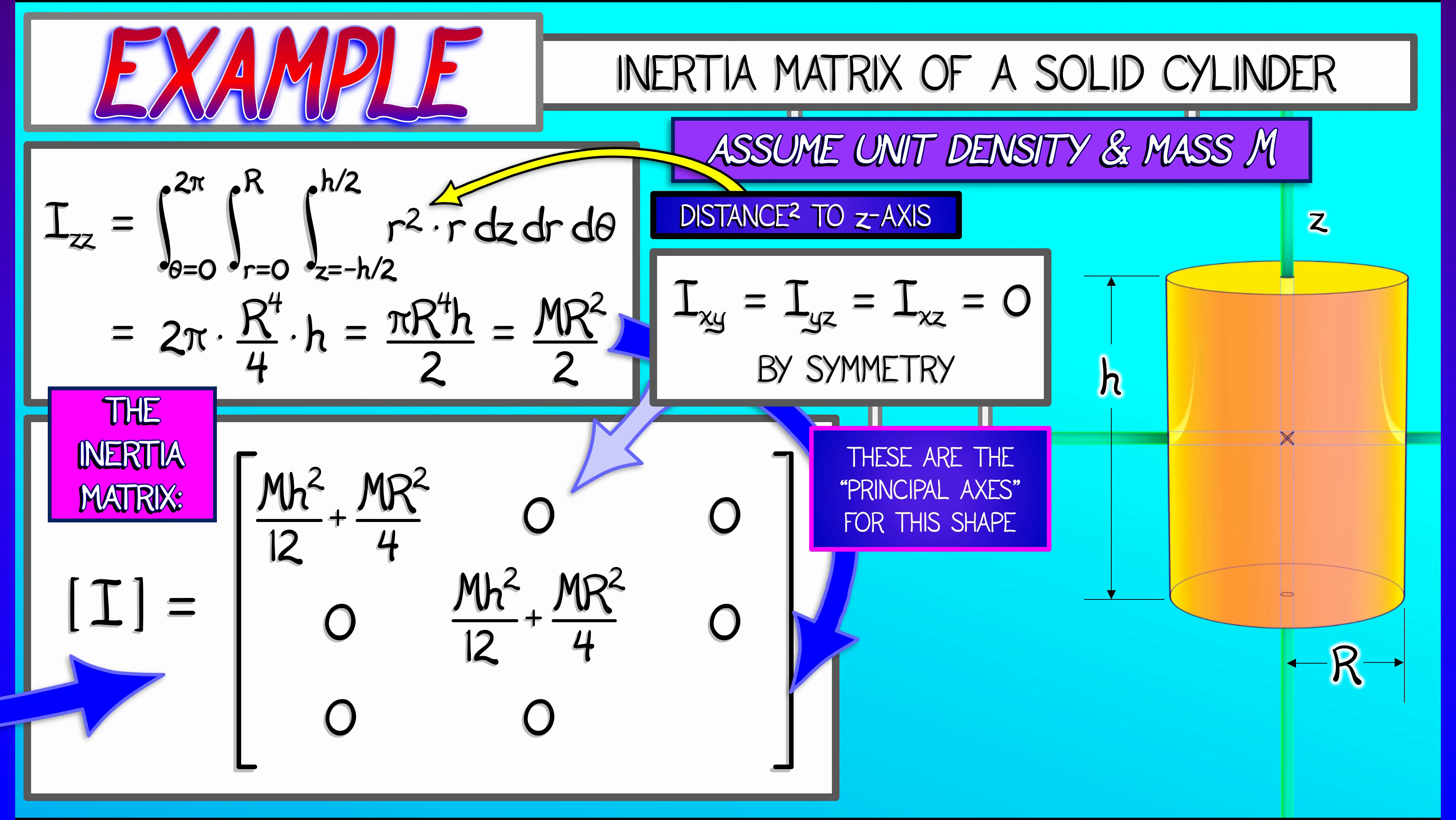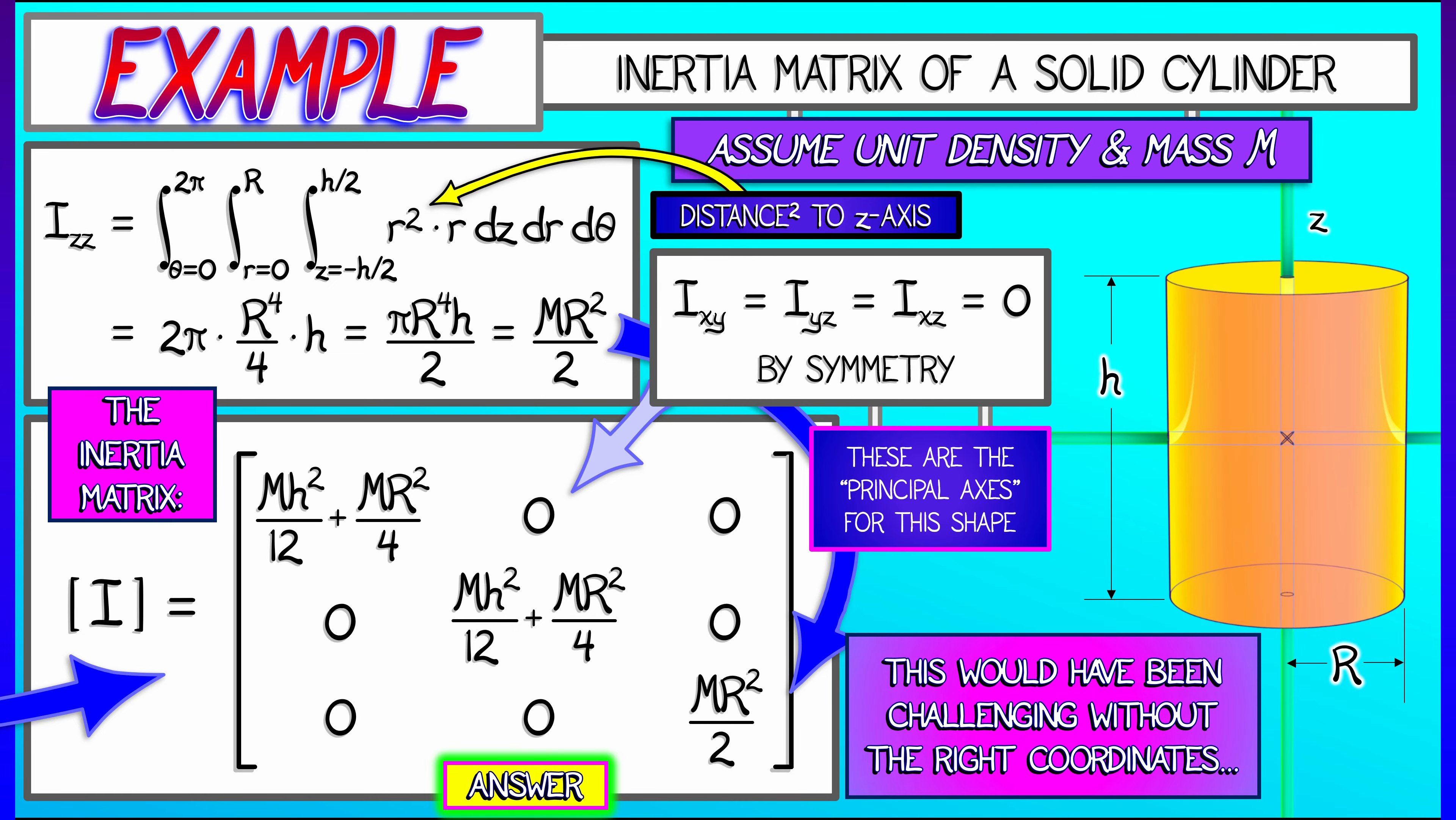That's it. That gives us our final entry in this inertia matrix for this cylinder, for the shape that would have been really difficult in Cartesian coordinates.